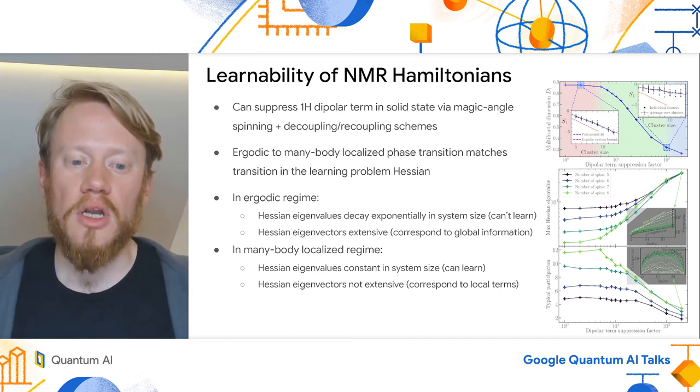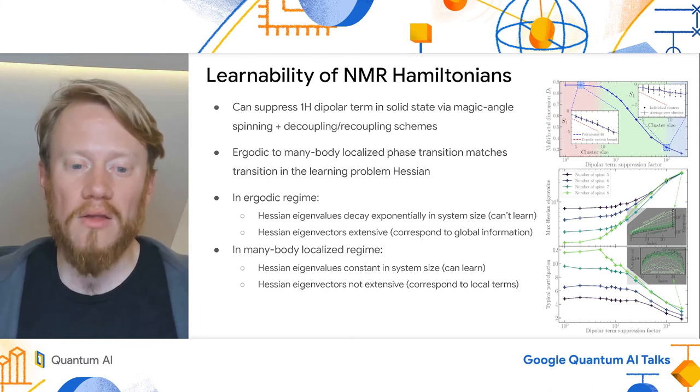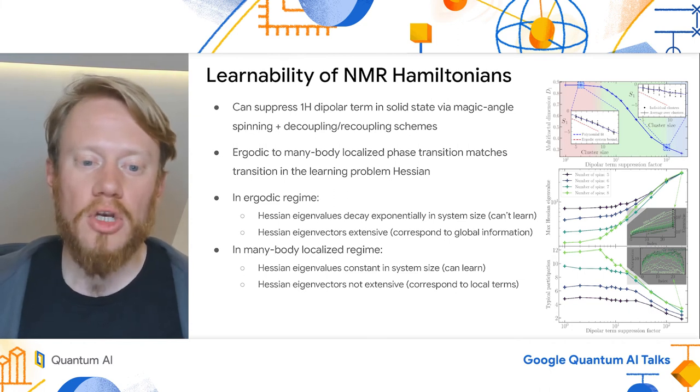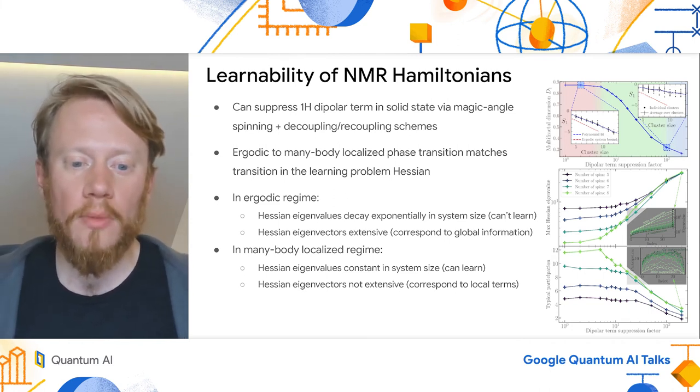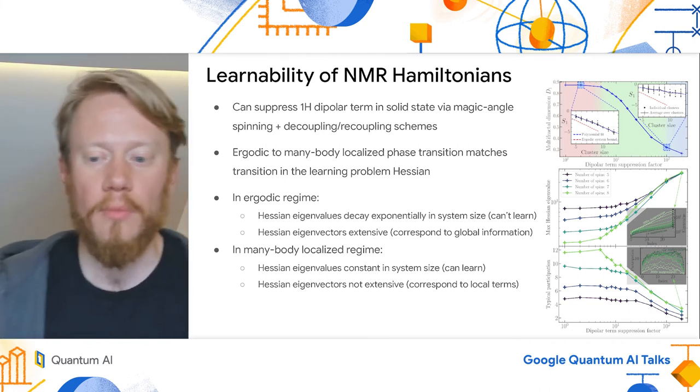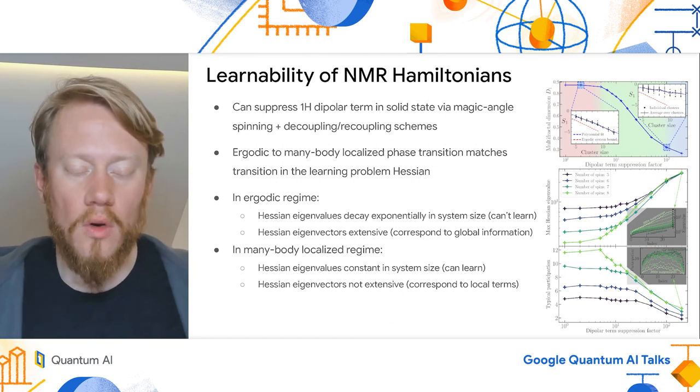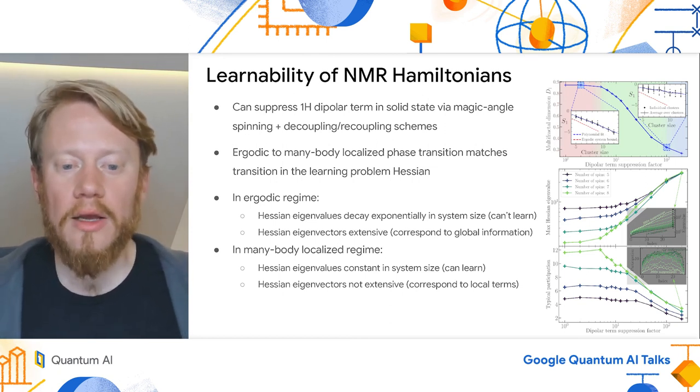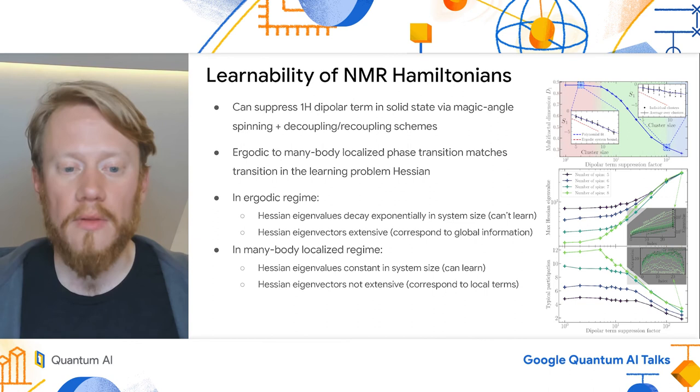There's a clear phase transition in the system as we tune this suppression factor that starts at around 3 to 4x. We can identify this by looking at the wave function fractality, the multifractal dimension, which roughly measures how much of the Hilbert space each of our system eigenvectors explore. The cool thing is, this transition clearly corresponds to an onset of learnability in the system.